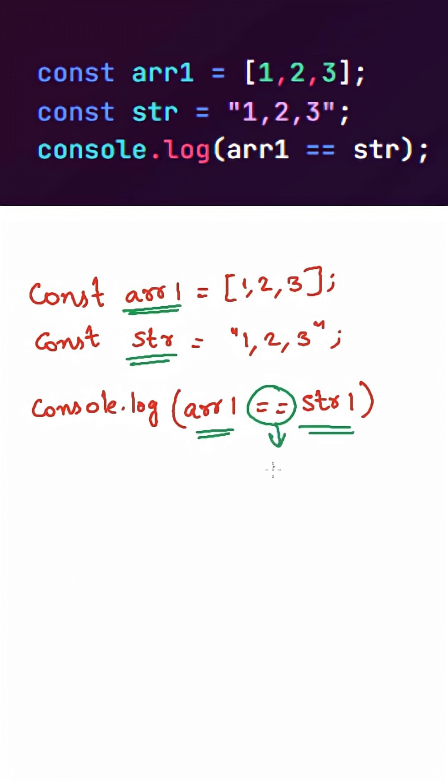In JavaScript, whenever we use a loose equality operator between a non-primitive data type and a primitive data type, then JavaScript will try to convert this non-primitive data type into its primitive equivalent.